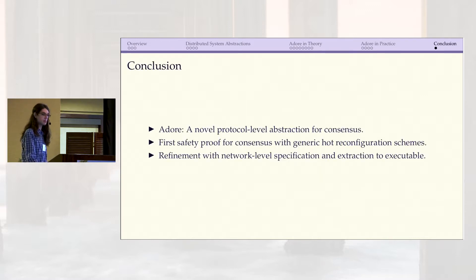In conclusion, Adore is a novel protocol-level abstraction for reasoning about consensus, and in particular we used it to complete the first safety proof of a consensus protocol with hot reconfiguration. However, despite our focus on reconfiguration here, that's really just one example of where Adore can be useful. It's a very flexible abstraction and could be used for all sorts of other extensions or properties like liveness, for example. The paper goes into much more details about the formal specifics of the model as well as the refinement proof and the generic reconfiguration scheme, so I encourage you to read that as well if you're interested. Thank you for listening.